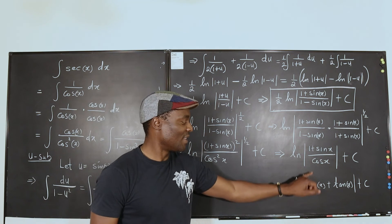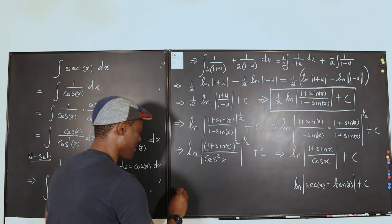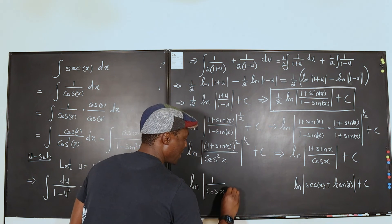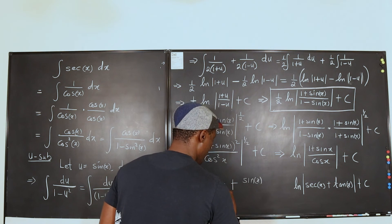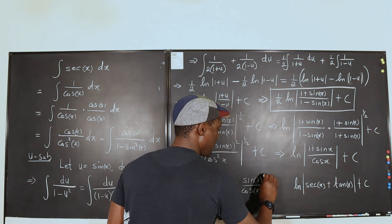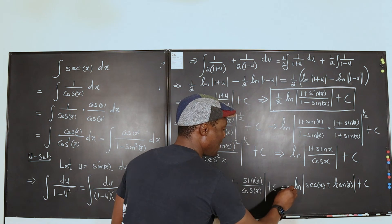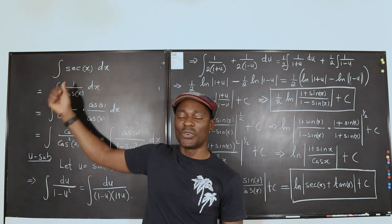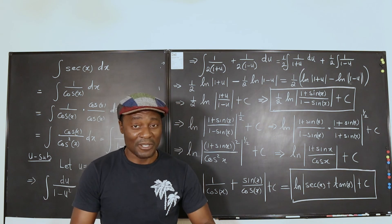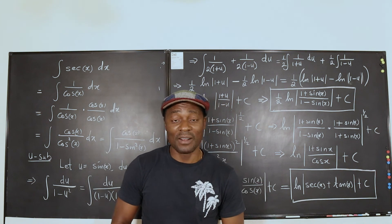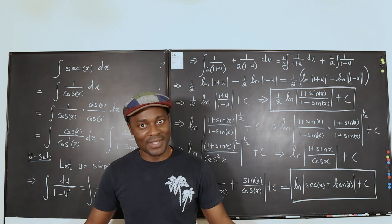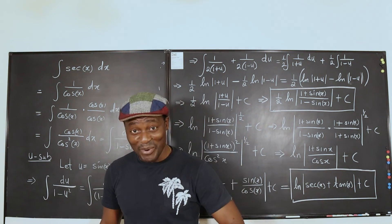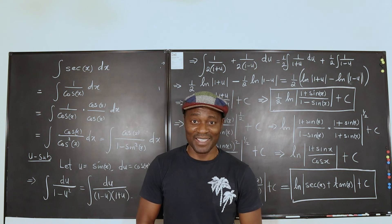Now we're coming to something that looks like the standard form, because this expression can be split: this is the same as the natural log of the absolute value of 1 over cosine x plus sin x over cosine x, which is equal to the universally accepted solution — ln|sec x + tan x| + C — as the indefinite integral of secant x. I believe you picked up something in this video: a skill, or a reminder of something you may have forgotten, or a reinforcement of these concepts. Remember to like, share, subscribe, hit the notification bell, and most importantly, don't stop learning — because those who stop learning have stopped living.